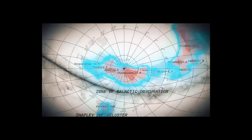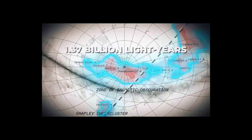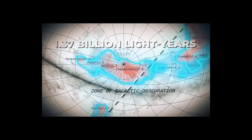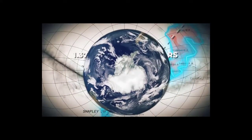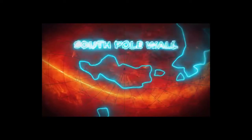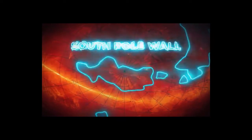A new structure of this kind, spanning an enormous 1.37 billion light-years from end to end, has been found arcing across the southern boundary of the sky. South Pole Wall is the name given to it by its discoverers.